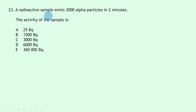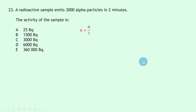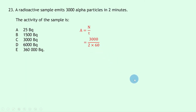Question 23: a radioactive sample emits 3000 alpha particles in 2 minutes. Using A = N/T: A = 3000 ÷ (2 × 60) = 3000 ÷ 120 = 25 becquerels. The answer is A.